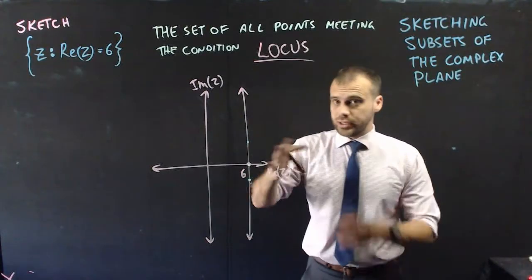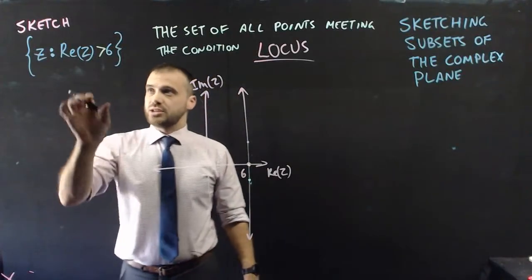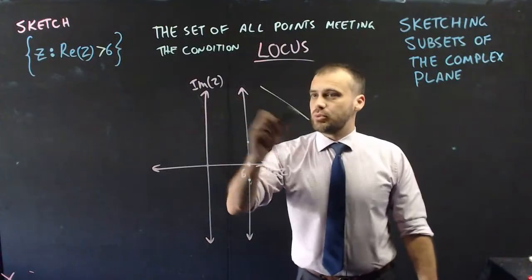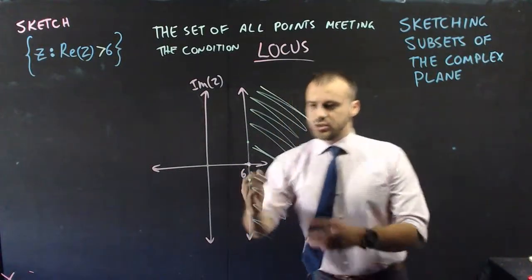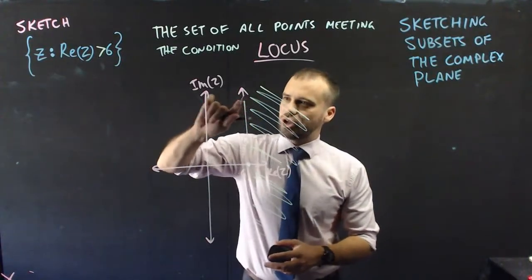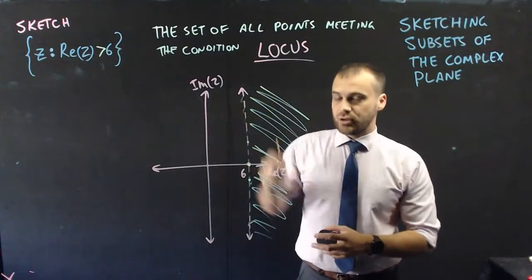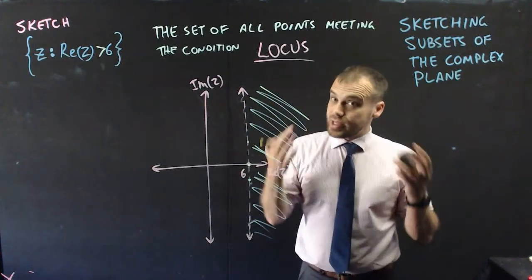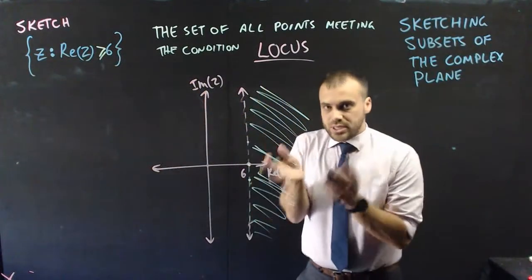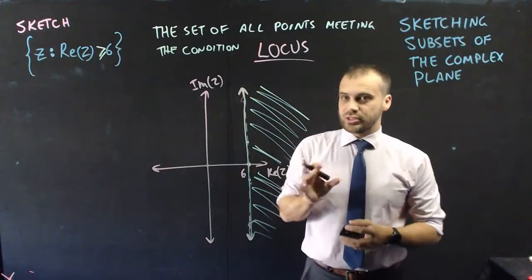Now let's change the question slightly — from equals to greater than. The set of all z such that their real components are greater than 6. We shade in the region to the right, but since it says strictly greater than, the boundary line must be dotted or dashed. If it were less than 6, we'd shade the other side. If it were greater than or equal to, the line would be solid.